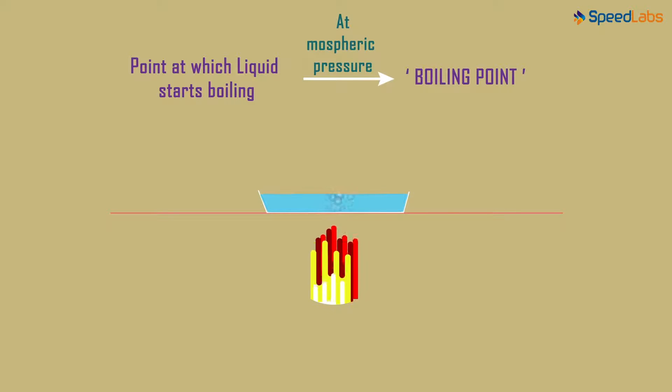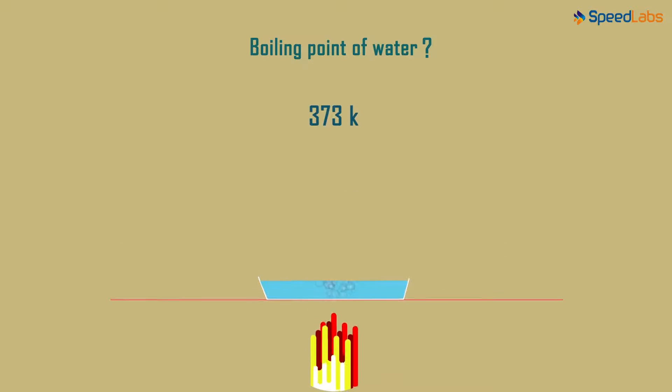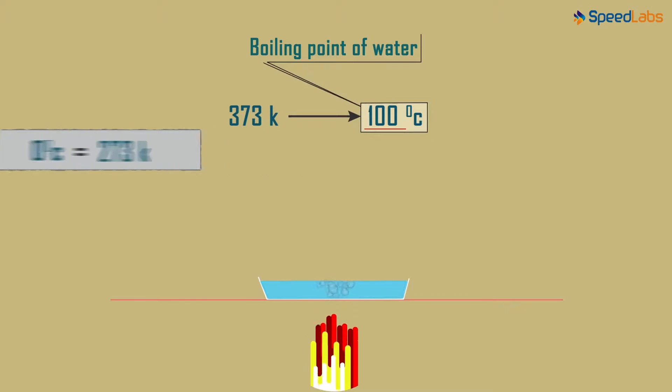Understand this well. It's the point at which liquid starts boiling at atmospheric pressure. What do you think is the boiling point of water? It is 373 Kelvin. Can you convert this to Celsius? It's easy. As 0 degrees Celsius is 273 Kelvin approximately, we subtract 273 from this to get the answer as 100 degrees Celsius. That's the boiling point of water.